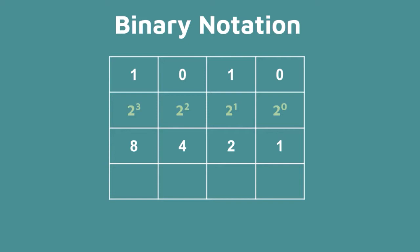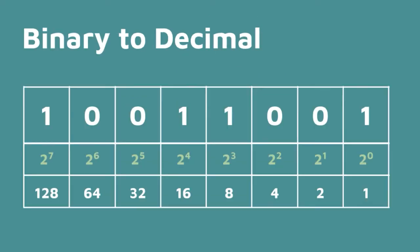The 0 exponent is always equal to 1. 2 to the exponent of 1 is 2 times 1 or 2. 2 to the exponent of 2 is 2 times 2 or 4. And 2 to the exponent of 3 is 2 times 2 times 2 or 8.